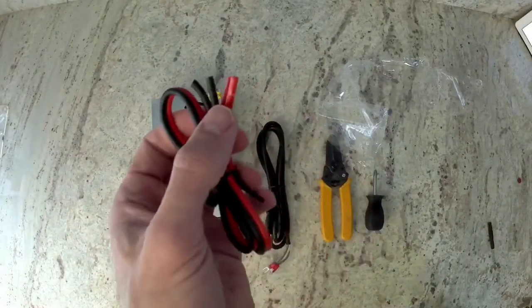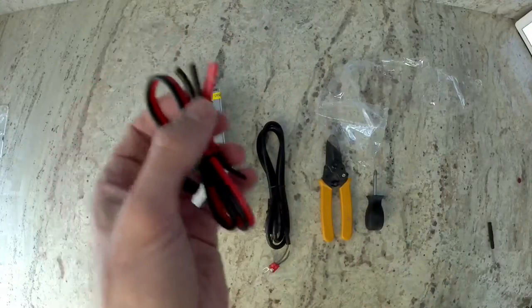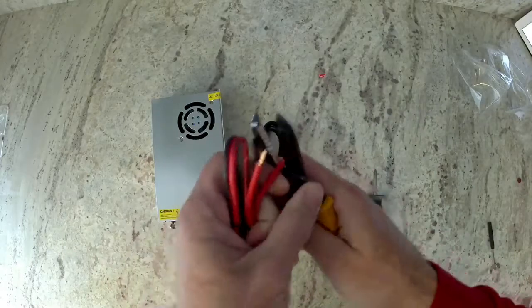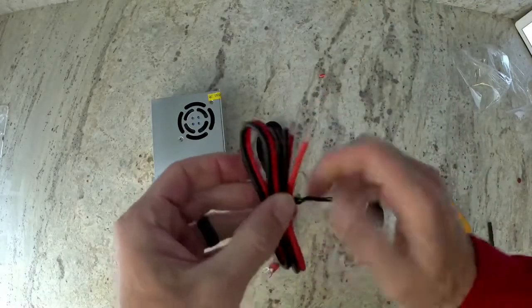Now on our black and red wire, we're going to remove a little bit of the insulation at the ends. I usually do about a quarter of an inch so that I can have enough room to screw those into the screw terminals.